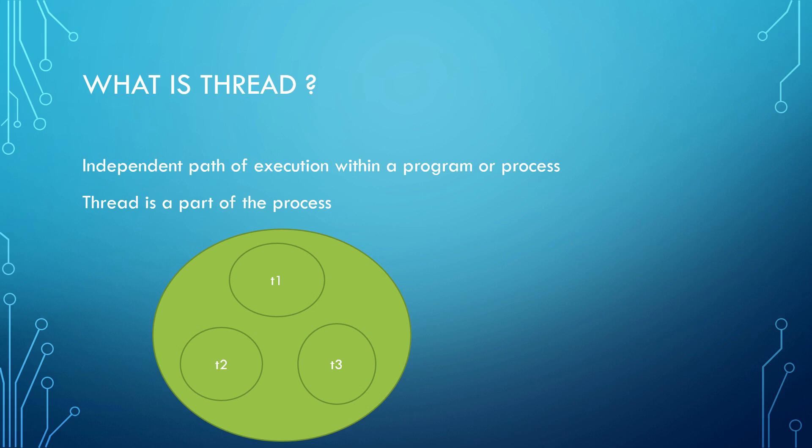So these both threads are a part of a huge application or process, which is the Microsoft Word application. The same is demonstrated in the diagram — the bigger circle is Microsoft Word and the threads T1, T2, and T3 are the different parts of the bigger process, which can be spell check, autocorrect, or something else. So that is what a thread is.